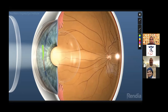Then you have the iris, which gives the eye its color. Then you have the pupil that serves as an aperture of the eye. Then you have the human lens. Most people don't realize that we have a lens in each eye, like a camera.